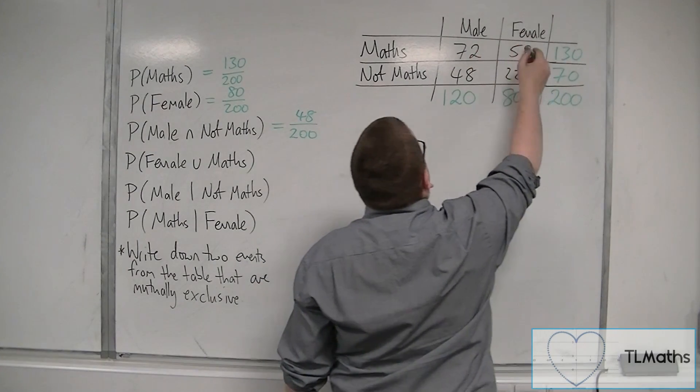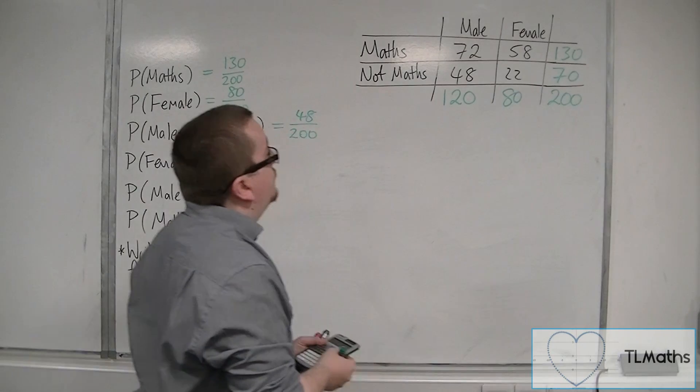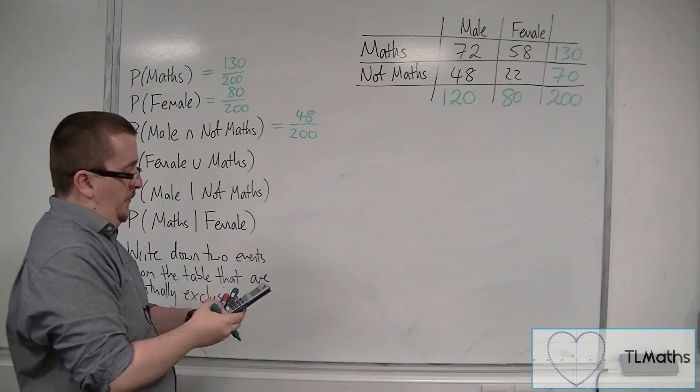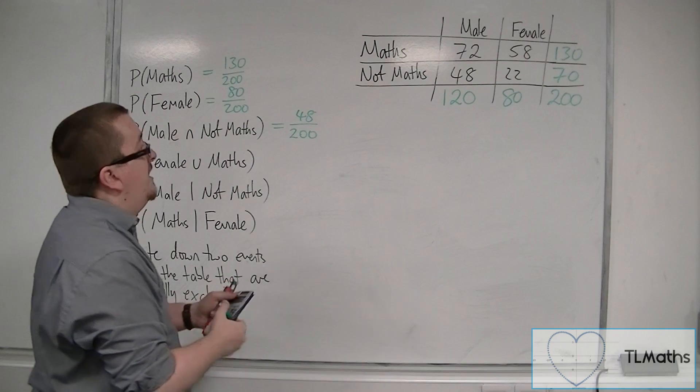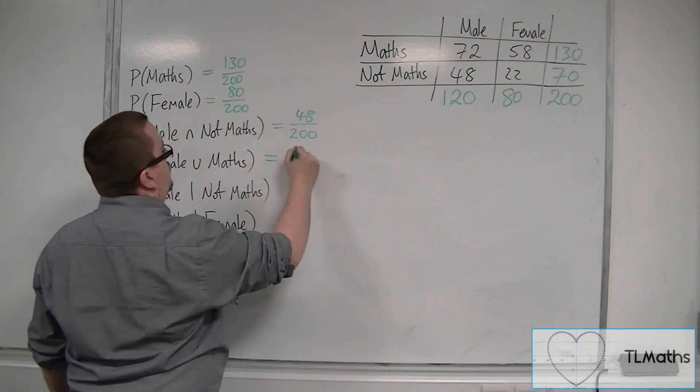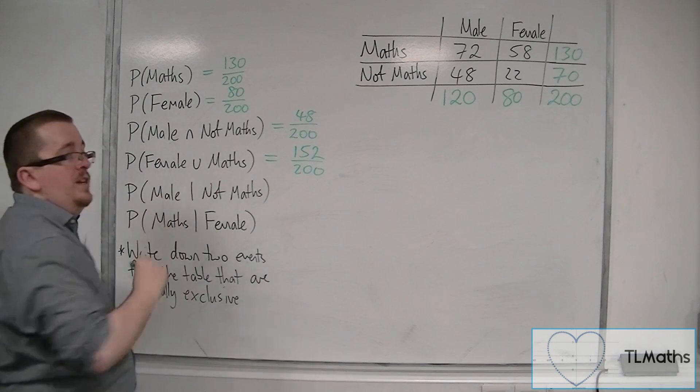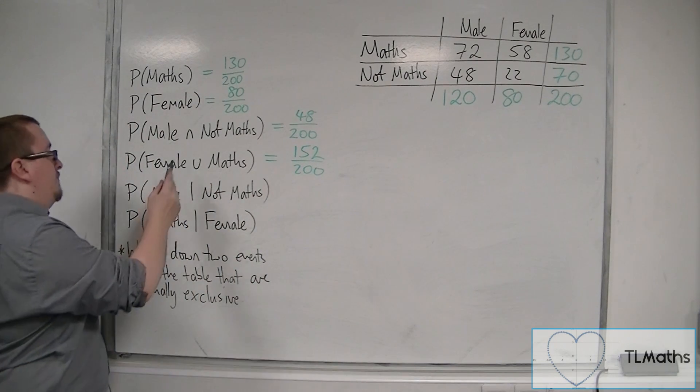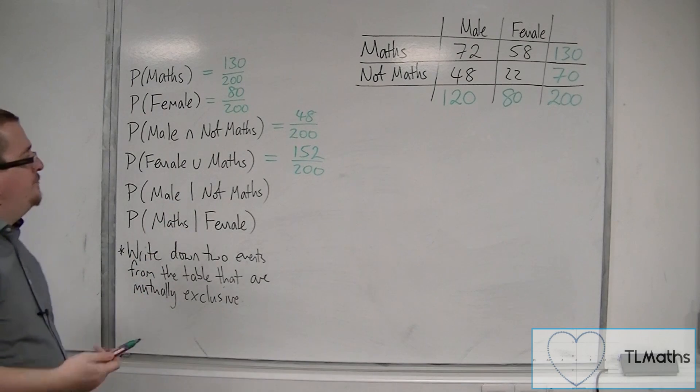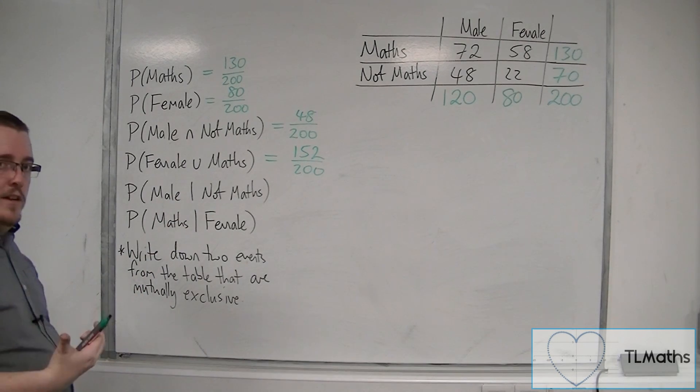So 72, 58 and 22. Add those together. 72 plus 58 plus 22, and that gives me 152. So 152 out of 200. So remember that union means A or B or both, thinking back to the Venn diagrams.